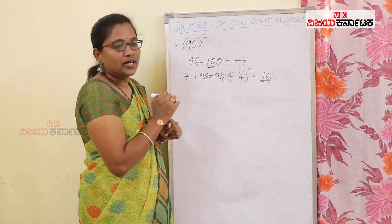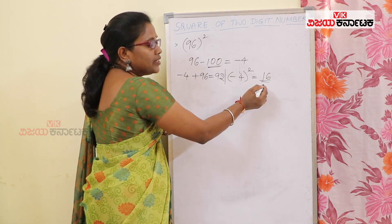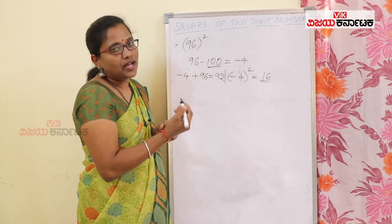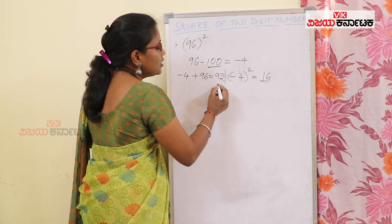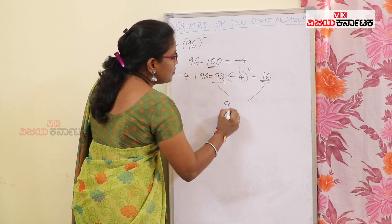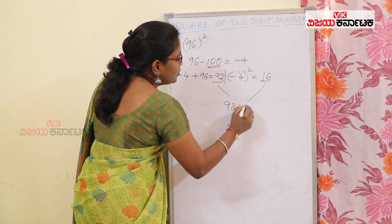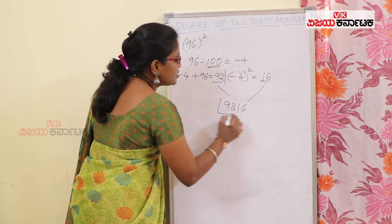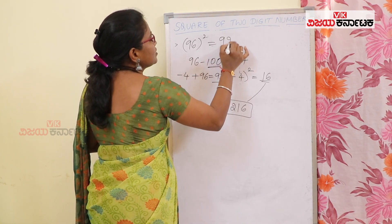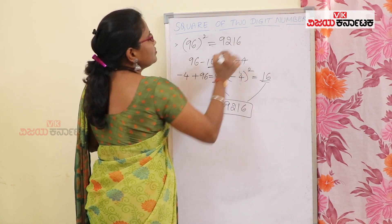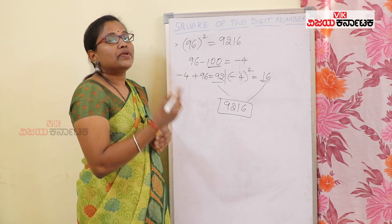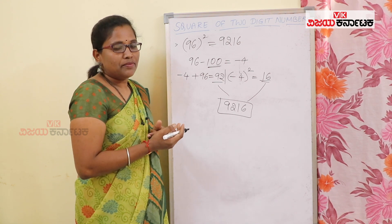We add 100. There are two digits in the square. It is 9216. This is the square of 96. So 100 plus — that means a three-digit number.